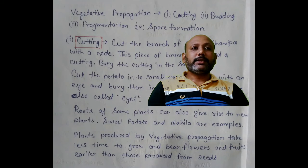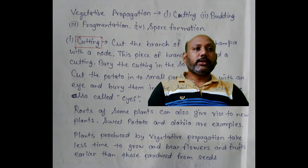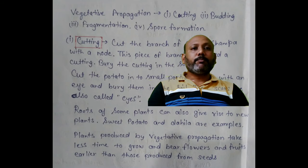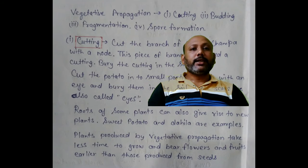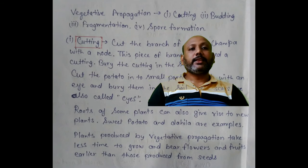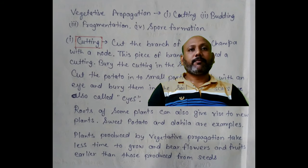Roots of some plants can also give rise to new plants — sweet potato and dahlia are some examples. Plants produced by vegetative propagation take less time to grow and bear flowers and fruits earlier than those produced from seeds.